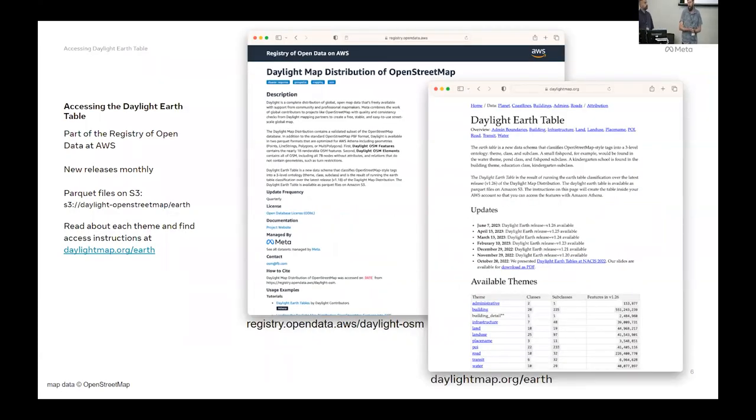So where can you get the Daylight Earth Table? Daylight and the Earth Table, the Daylight Earth Table, are part of the registry of open data at AWS. So these are hosted on AWS.